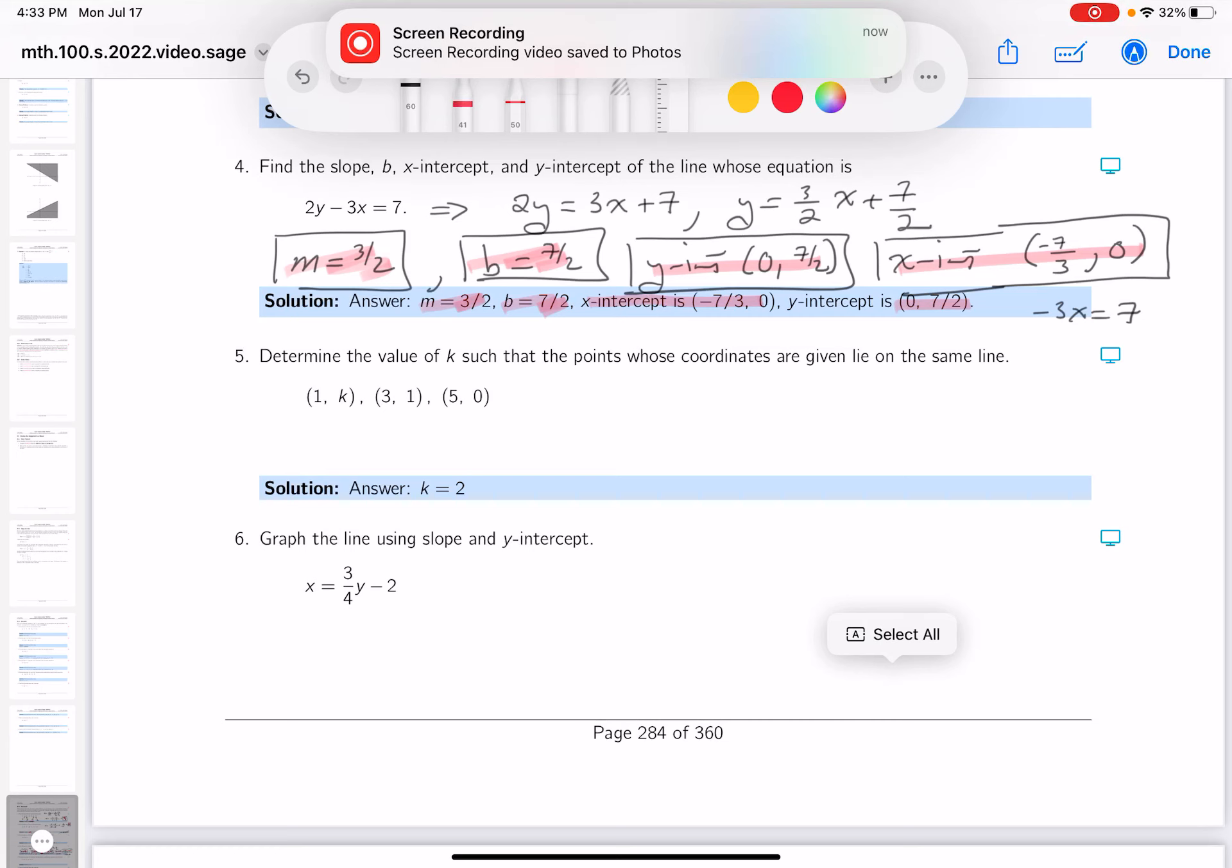All right, number five. A little kind of strange question, but the bottom line is if these three points are on the same line, their slopes have to be identical through those points.